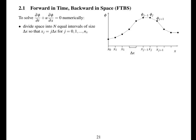The first numerical method we're going to look at for solving the advection equation is called forward in time, backward in space. Here again is the advection equation that we're going to approximate with finite differences. We're going to divide space x into n equal intervals, each of size delta x, so that position x_j equals j times delta x. We're going to have a value of phi at each of those locations, so phi_j is at location x_j.